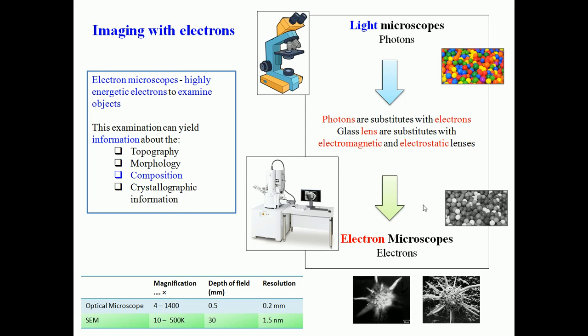The electron microscope image is a derived image based on counting electrons scattered from the sample. Where there are more electrons, a bright spot is captured; where there are fewer electrons, a black spot is recorded. Depending on how many electrons are recorded at each position, a black and white image is created. The image is constructed based on the collection of scattered electrons.